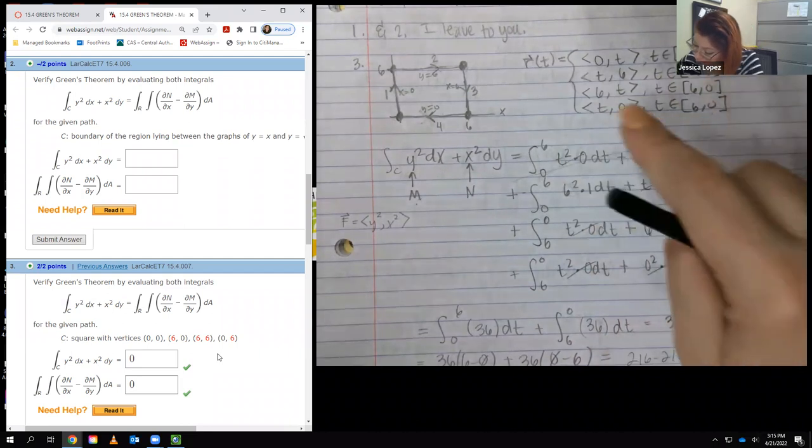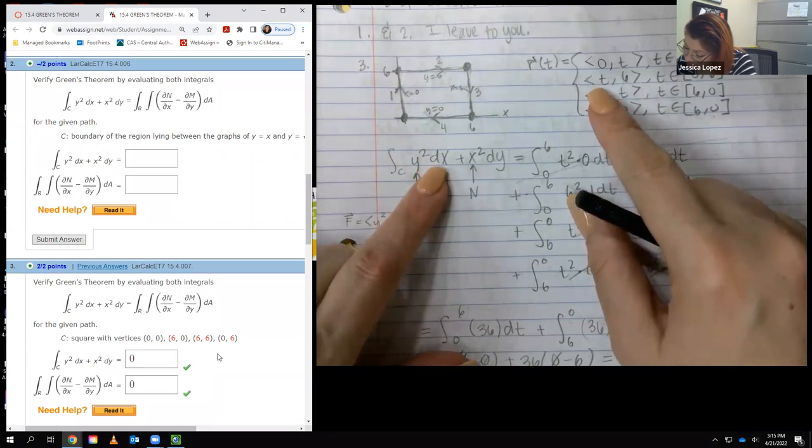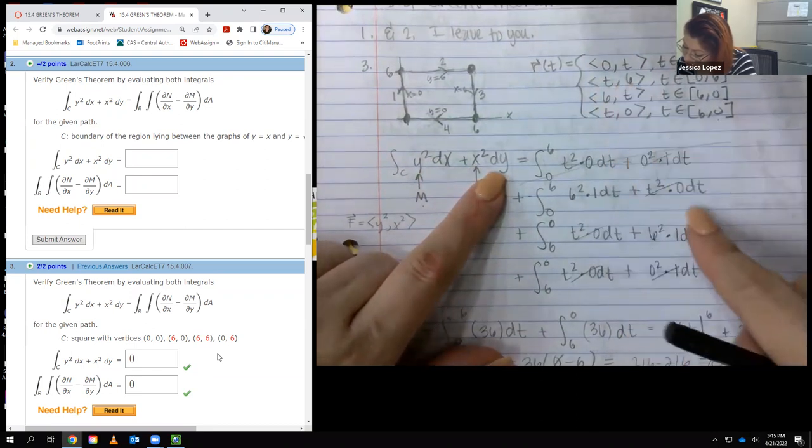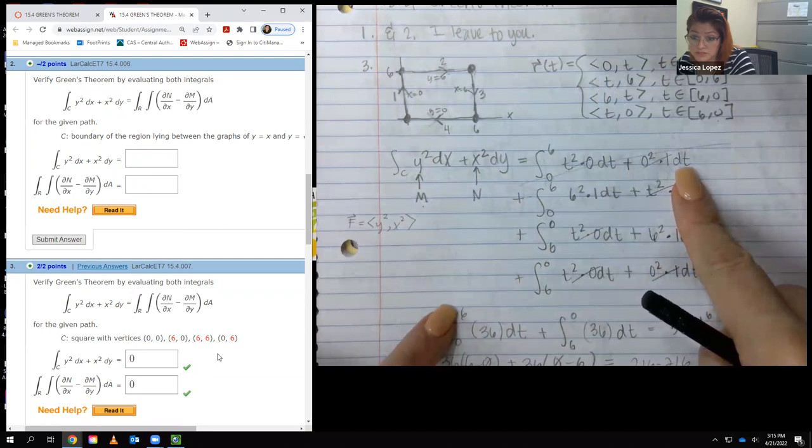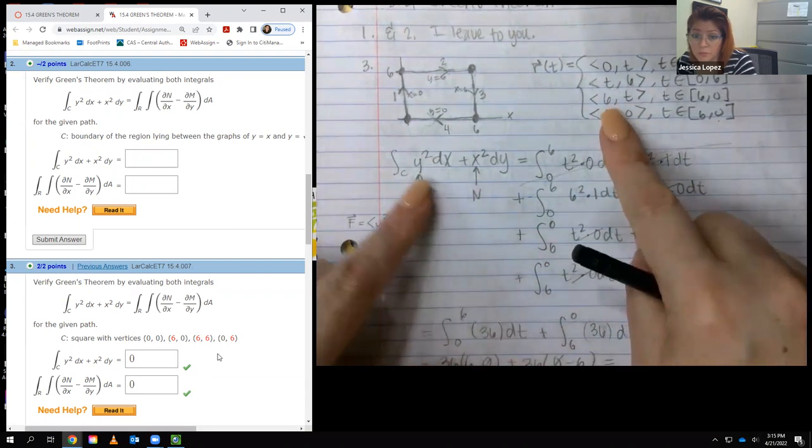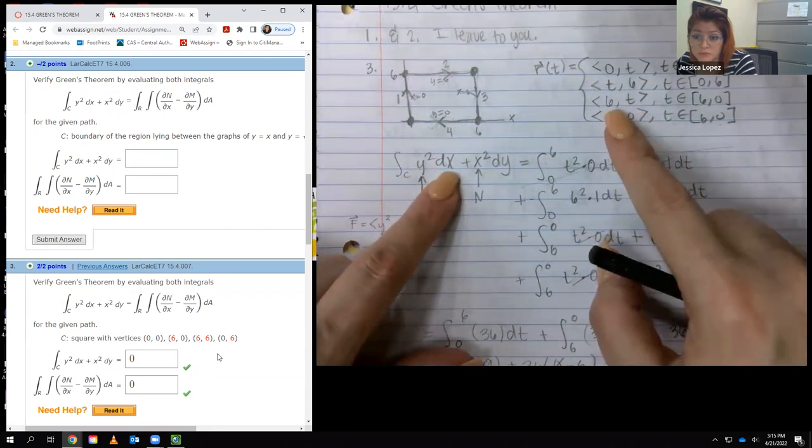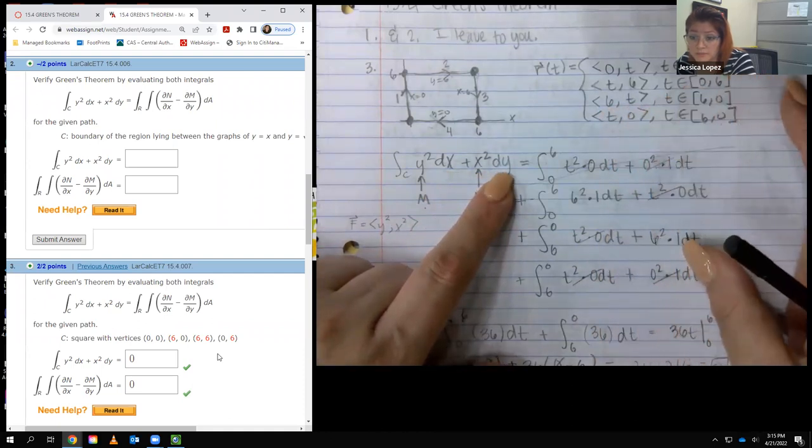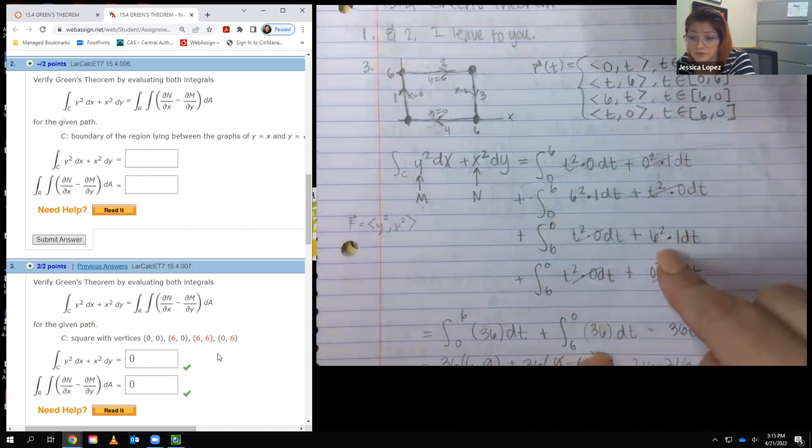Now we have to continue with the next one, there's three parts. Here, Y squared is actually six squared, and then the derivative of X would be just one DT. Then here we have X squared, so it's T squared, and then the derivative of Y would be zero DT. So it's like this guy's not even there, so you really only have the integral from zero to six of this 36. For the third one, you have Y squared which is T squared right here times DX, the derivative of six is zero DT. Then we have X squared, so six squared times DY which is one DT.